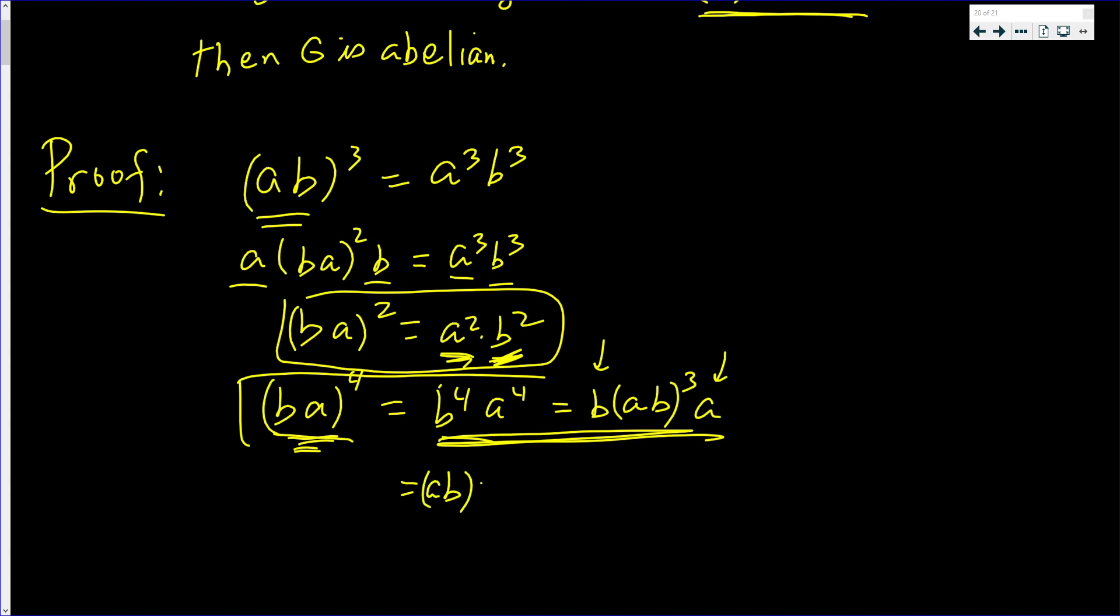I get (ab)³. And when I kill off a b on the left, I get b³. And an a on the right, I get a³.